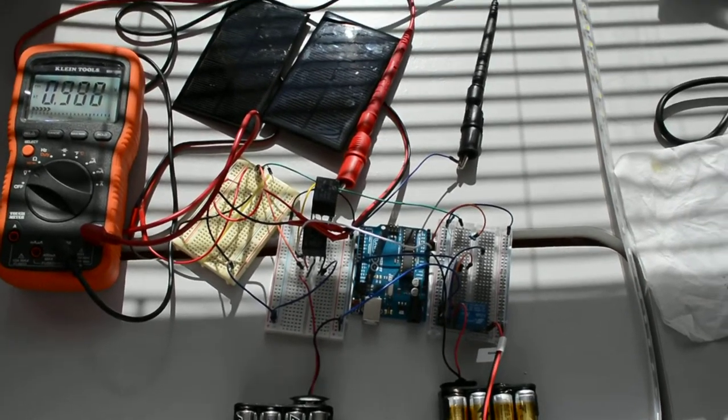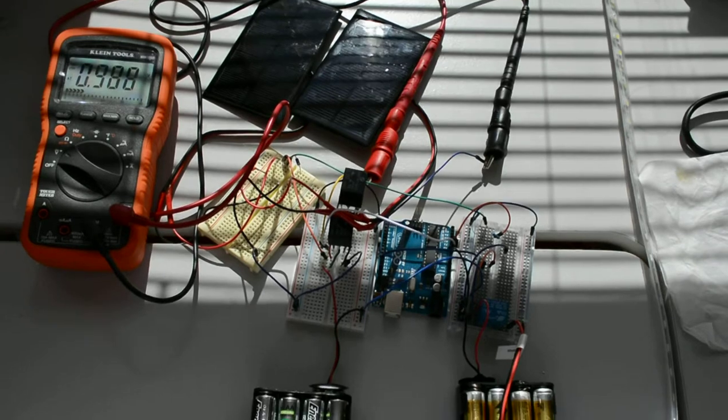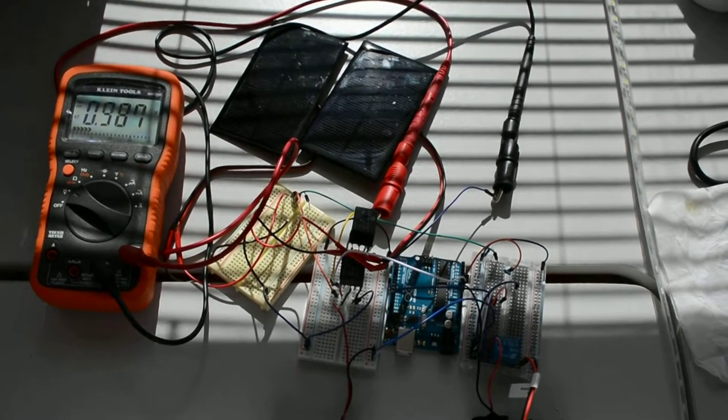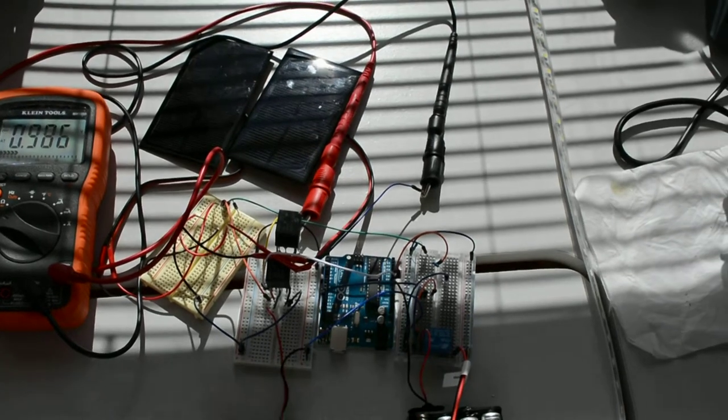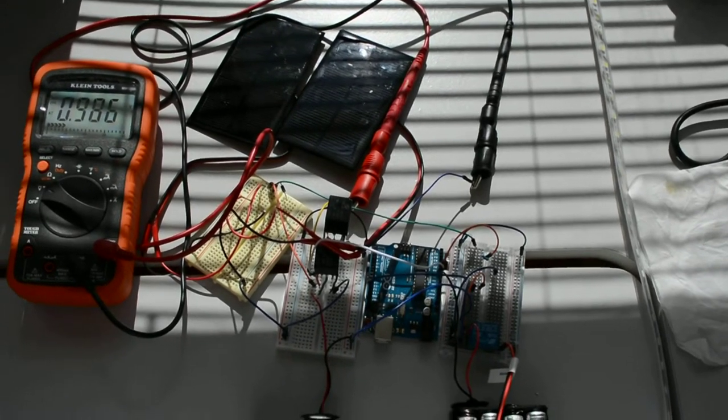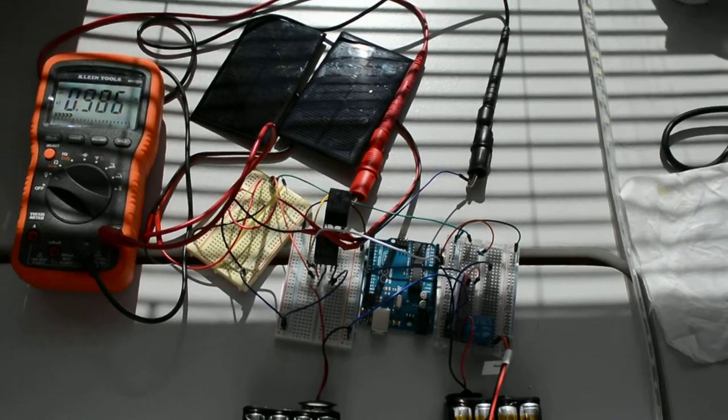Okay, this is our Arduino solar panel lighting system iteration number five. In the previous iteration number four, I said there's a bug - the LED is not turned on - but that's actually not true. It's actually working. I'm surprised.